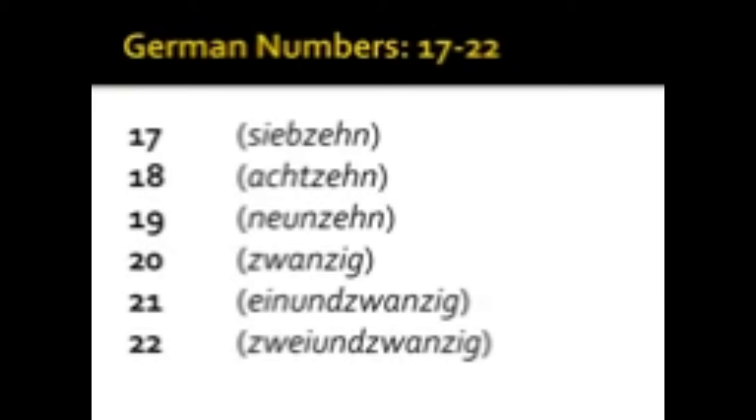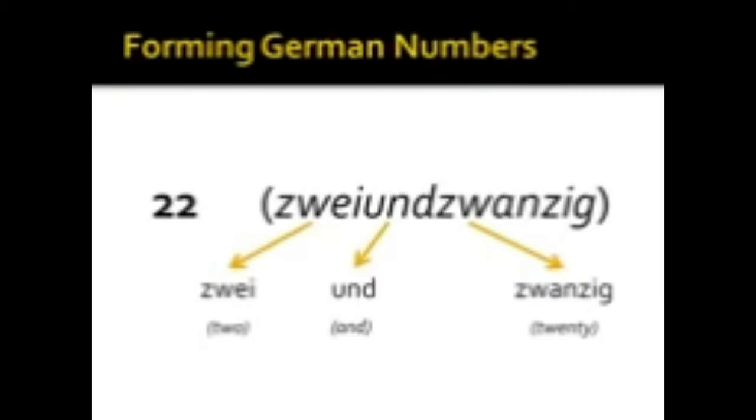Einundzwanzig, zweiundzwanzig. So once we get up to twenty, things start to look a little bit different in German. So let's look a little bit closer at number twenty-two. In English, we say twenty-two. We start with the higher number, twenty, and then tack on the lower number, two. German does it the exact opposite. Zwei und zwanzig. Two and twenty. So once we get to twenty, and actually everything from twenty to ninety-nine, we're gonna start with the lower number first, and then add the higher number.